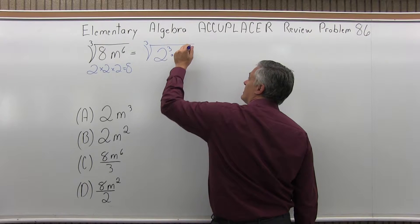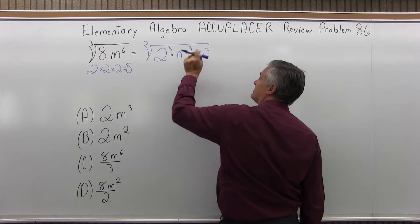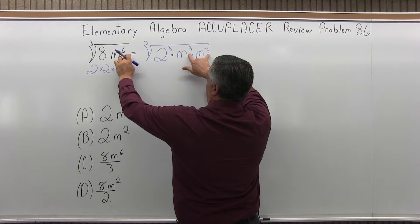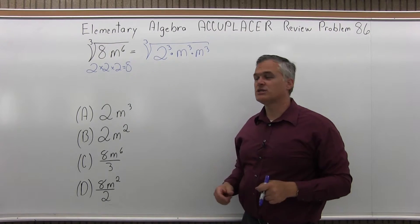And m to the 6th, let me write that as m to the 3rd times m to the 3rd again. That's an m to the 6th. And when you multiply two things like m to the 3rd and m to the 3rd, you add the exponents. 3 plus 3 is 6. So it's the same thing, I just changed this form a little bit.